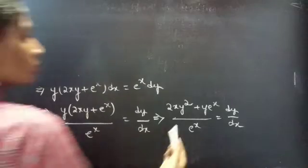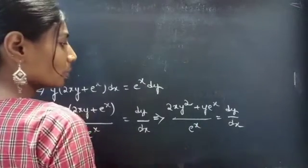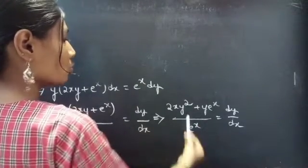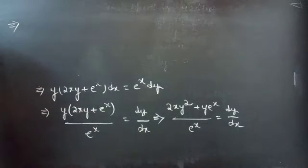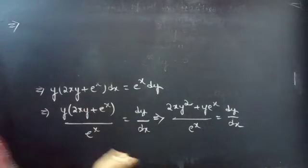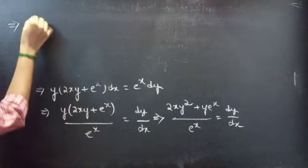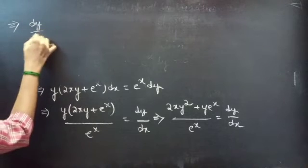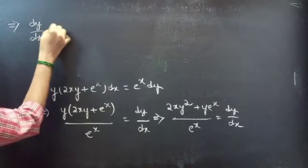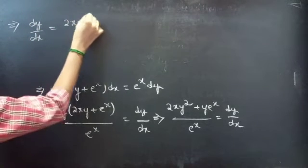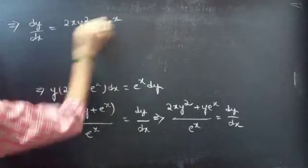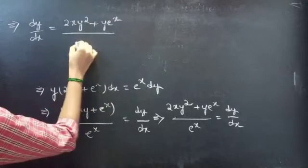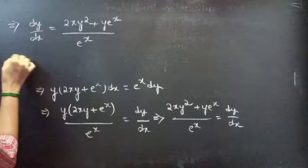If you notice, you are having two terms in the numerator and one term in the denominator, so we can split this expression into two terms. We will write dy by dx equals to (2xy² + y·e^x) by e^x.